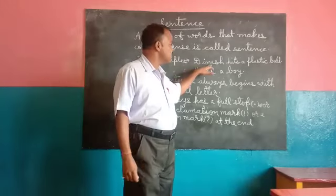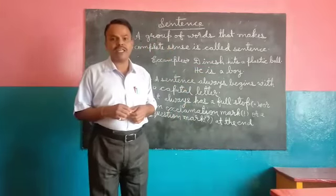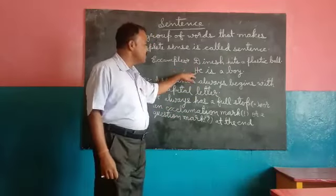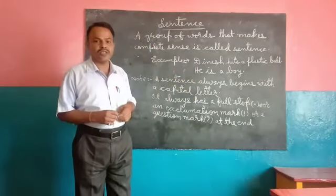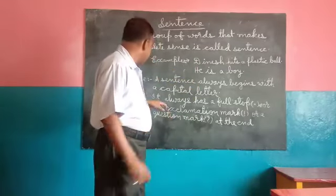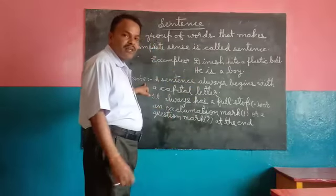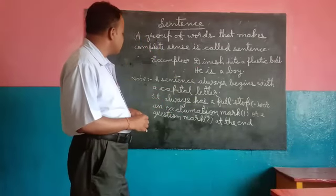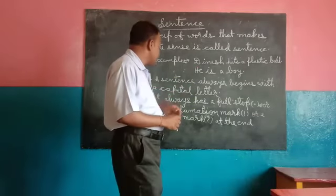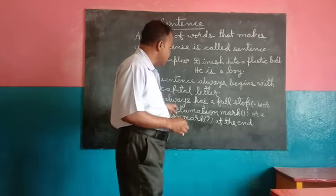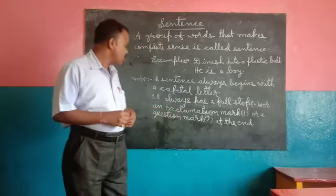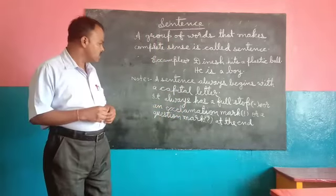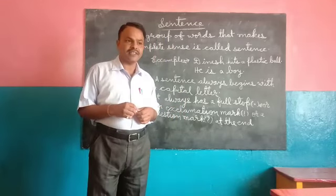The police people have run on the field. The test is a little dangerous. A sentence always starts with a capital letter, and it always has a full stop, an exclamation mark, or a question mark at the end.